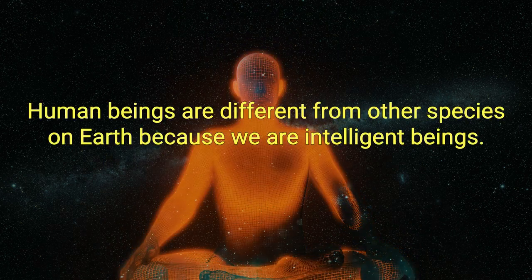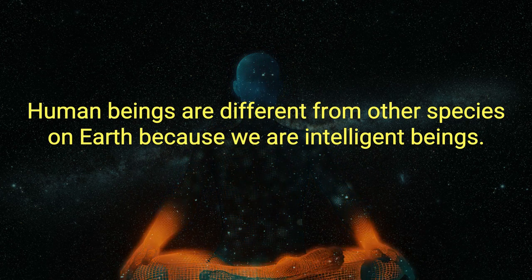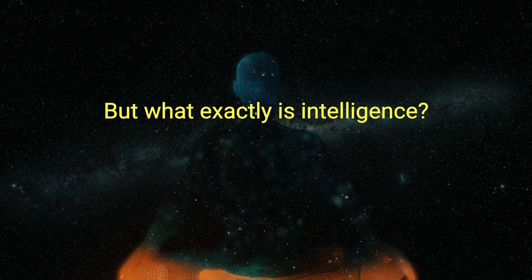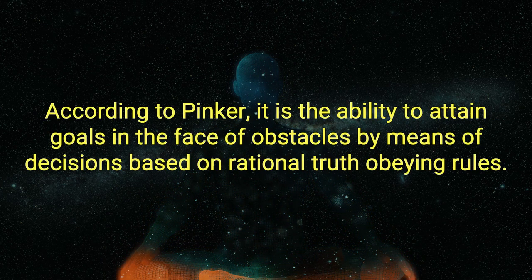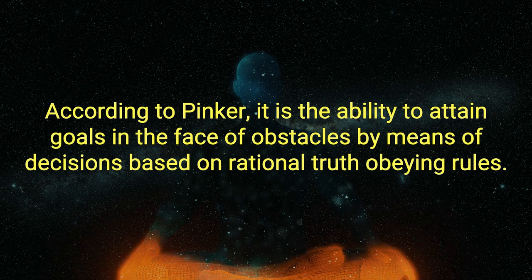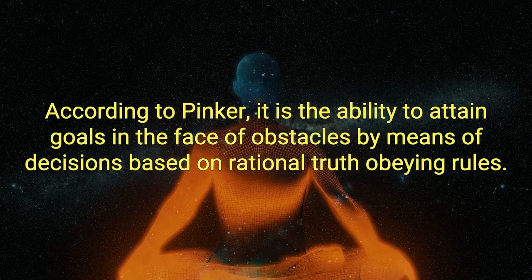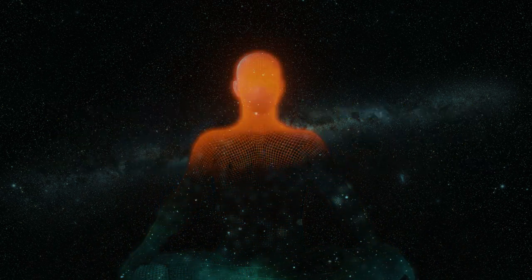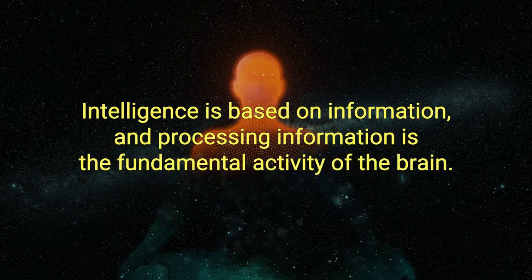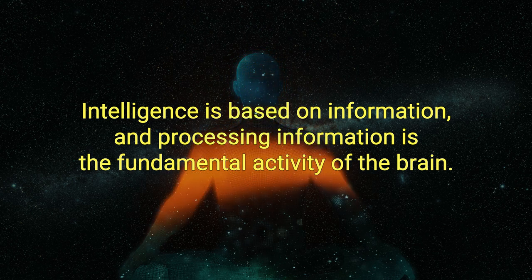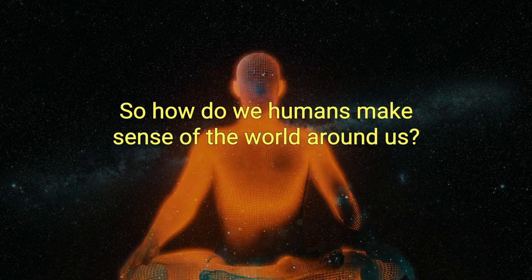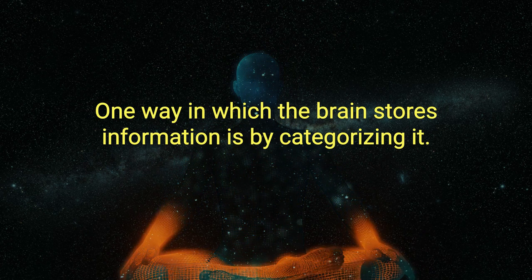What is intelligence? Human beings are different from other species on Earth because we are intelligent beings. But what exactly is intelligence? According to Pinker, it is the ability to attain goals in the face of obstacles by means of decisions based on rational, truth-obeying rules. Intelligence is based on information, and processing information is the fundamental activity of the brain. So how do we humans make sense of the world around us? One way in which the brain stores information is by categorizing it.